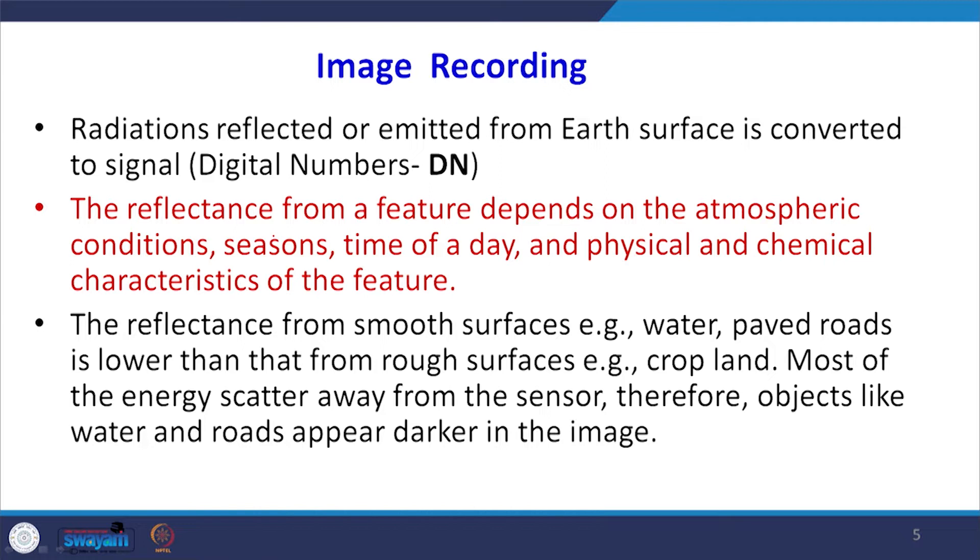The DN value will vary due to seasonal changes, atmospheric conditions, and changes in the physical and chemical characteristics of the object. We have to consider how to best use digital numbers, including for identifying change in a particular object over time. We have reflectance from smooth surfaces and from rough surfaces, and these reflectances will be different, allowing us to identify particular objects.